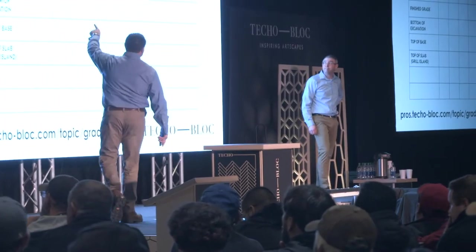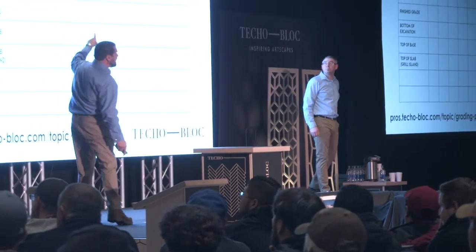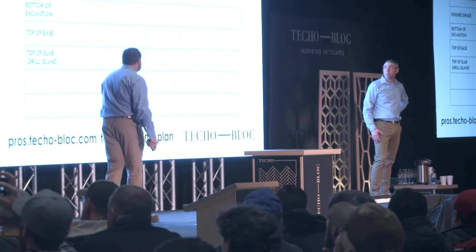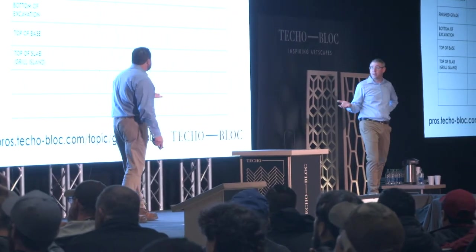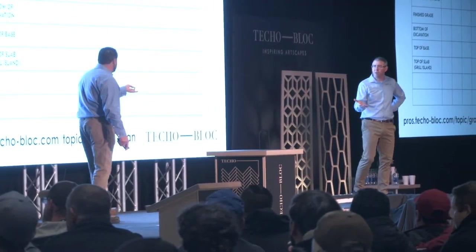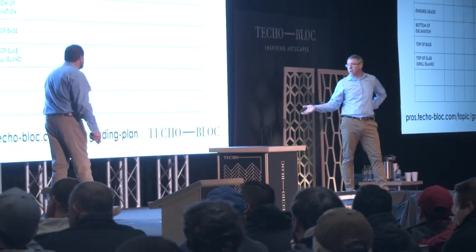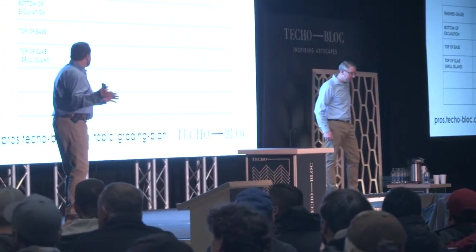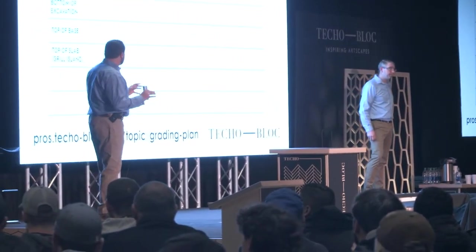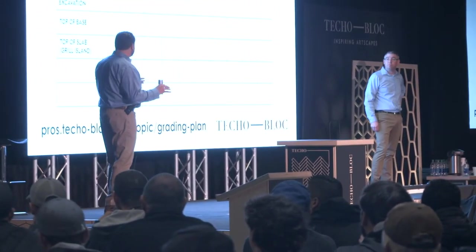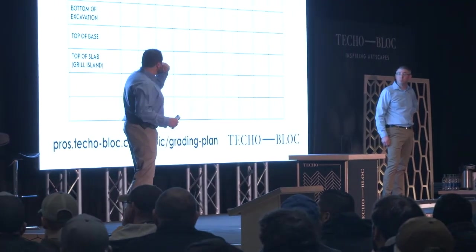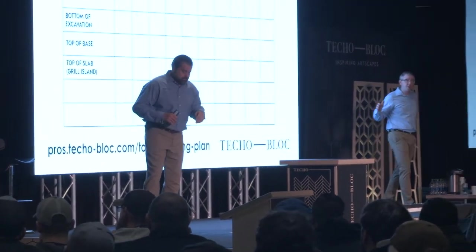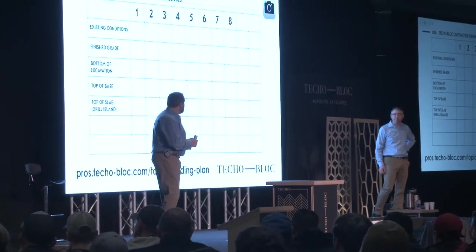In the upper left-hand corner, that box is blank. What would go in that box? We would write what the project is — the patio, the walkway, or the driveway. We may have multiple grading plans on one project. Across the top we have numbers — those numbers correspond to all the different pins on the job site: grade stakes across that project.